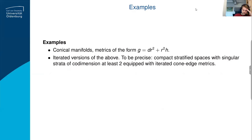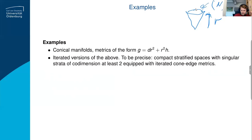What do we have in mind as examples? Conical manifolds — things with metrics like this — will be examples. So think of something where one direction is the radius and then you have a cross section with metric h. That cross section with metric h gives some other manifold, and this is what I mean by a cone.